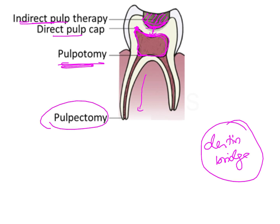Whereas in pulpectomy, this is similar to root canals seen in permanent teeth where the entire pulp tissue till the root apex is removed.